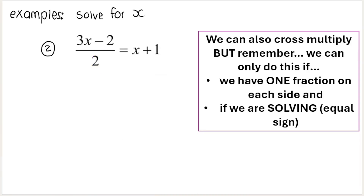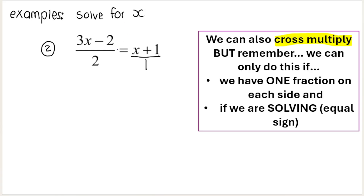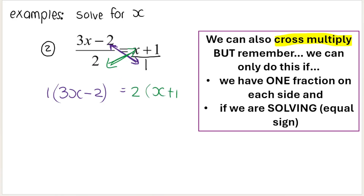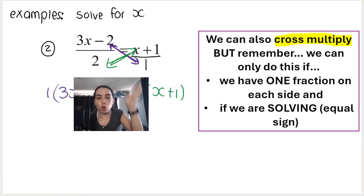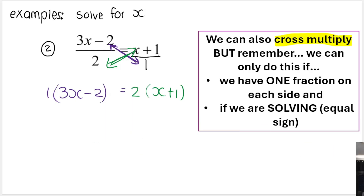Now some of you may be thinking there's a way easier method: we can cross multiply. We may cross multiply in this case. This is written as a fraction, and this I can write as a fraction over 1. When I say cross multiply, I mean multiply the numerator on this side with the denominator on the other side. So 1 multiplied by 3x minus 2, and then 2 multiplied by x plus 1. We multiply across the equal sign like that. Remember to use brackets if you do that.